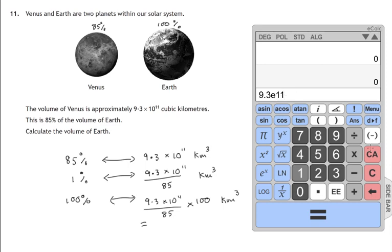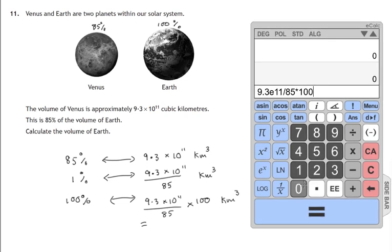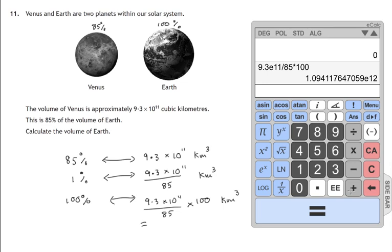So I'm putting in 11 as times 10 to the power 11. We then divide by 85 and multiply by 100. The answer to that in scientific notation is 1.094 and goes on and on. And the little e 12 here means times 10 to the power 12.